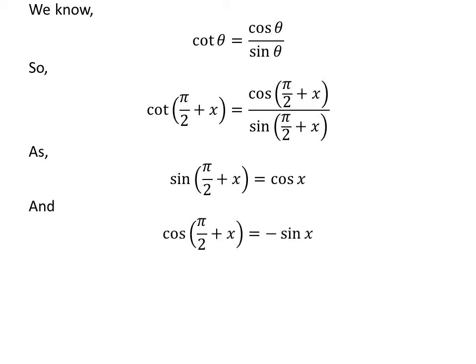Let us apply the above identities in the expression of cotangent of half of pi plus x. So cotangent of half of pi plus x is equal to minus sin of x. The proof of this trigonometry identity has been explained in the video appearing in the upper right corner, and the link has also been mentioned in the description section.